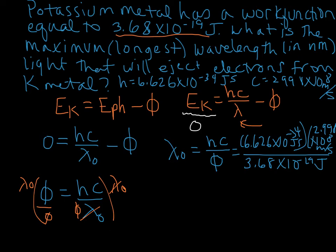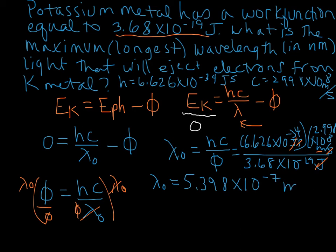Now let's cancel units: we can cancel out joules, and we can cancel out seconds — seconds in the denominator on the speed of light and seconds in the numerator in Planck's constant — and that leaves us with only meters. That's promising because we're calculating a wavelength. When we multiply hc and divide by the work function, we get 5.398 times 10 to the negative 7 meters. Now I'm going to go to the next slide and convert that to nanometers.